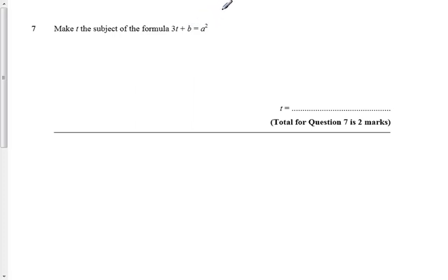Okay, question 7 asks us to make t the subject of the formula. Well, that means what we're looking for is to get a formula which is t equals something. That means that t is the subject. t is on its own, and the rest of the variables and numbers are somewhere else in the equation.